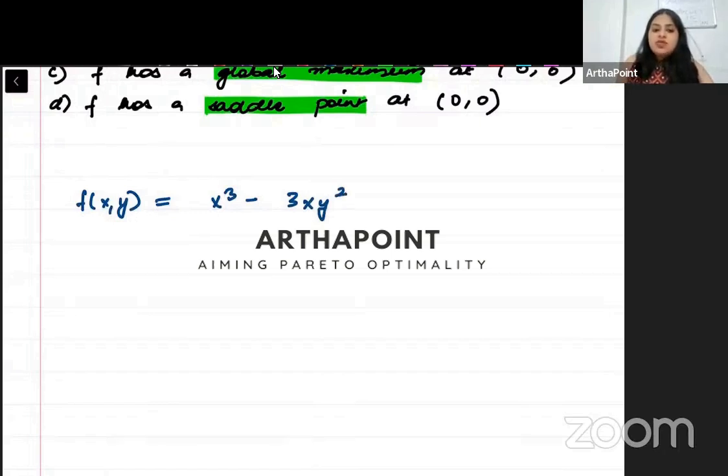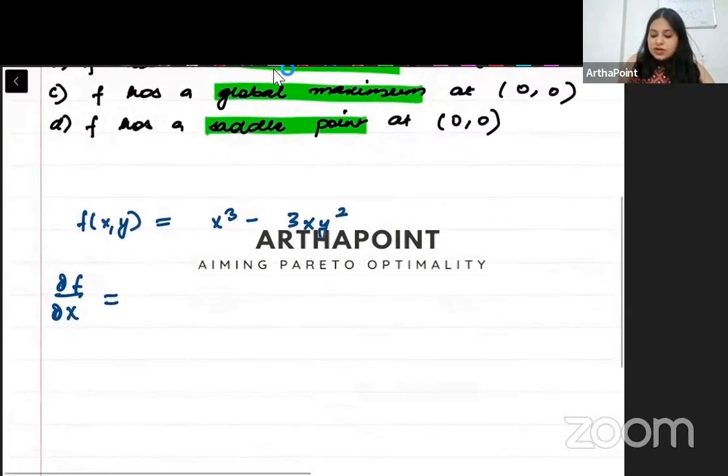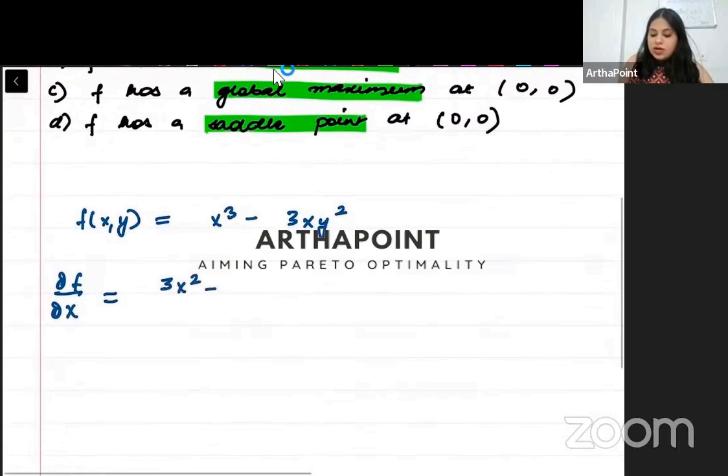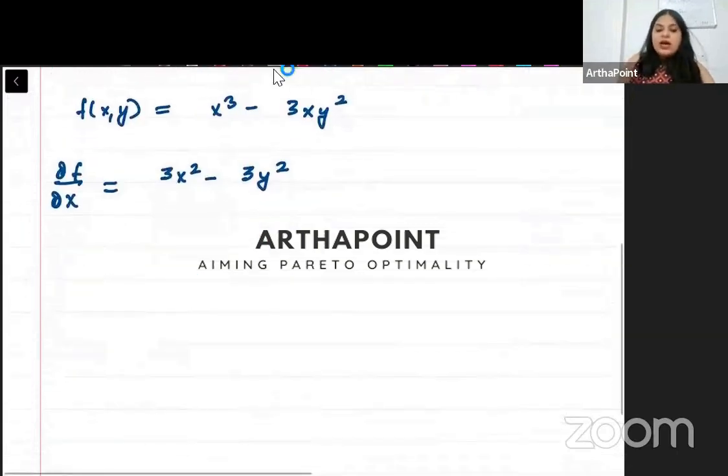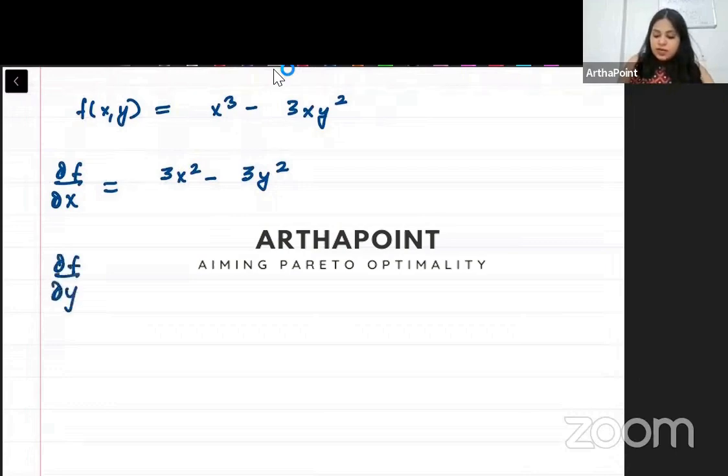First, I must differentiate this with respect to x. So when I differentiate the function with respect to x, I will get 3x squared minus 3y squared. Then I can differentiate it with respect to y. When I differentiate this with respect to y, I will get minus 6xy.